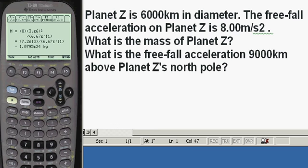And enter the variables and calculate it. Here's the answer, 1.0795E to the 24 kilograms. That's the mass of this planet, okay? Press Enter.